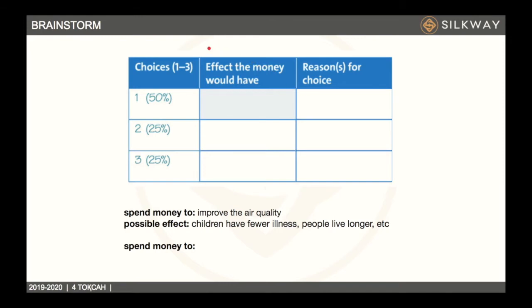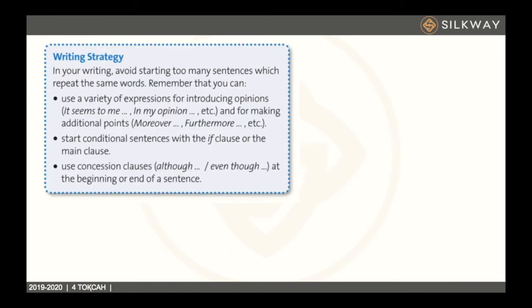Please write how many percent of the money you are going to allocate for each way of spending it, the effect it would have, and the reasons why you decided that way. This is the task — write it down and send it to me in my direct messages. Now let's move on to writing strategies.